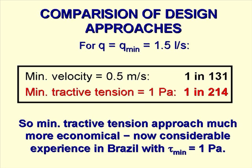What we need to do now is to compare the two design approaches, one based on minimum self-cleansing velocity of 0.5 metres per second, and the other on a minimum tractive tension of 1 pascal. And we'll do this for the minimum peak flow of 1.5 litres per second.